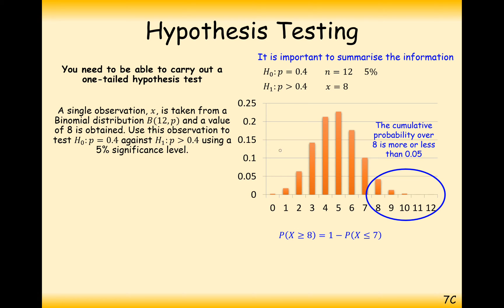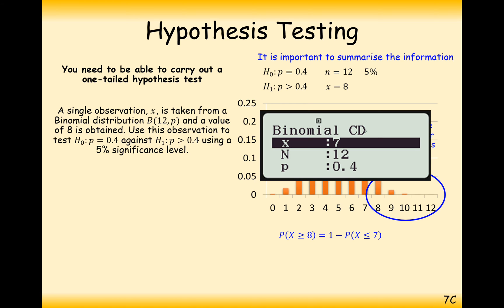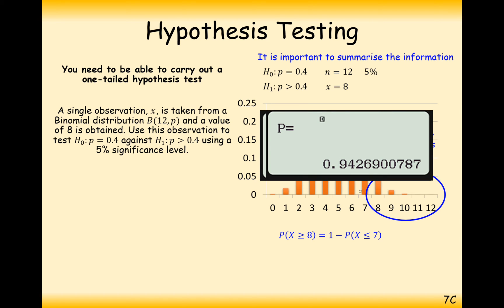We work out P(X ≥ 8) as 1 minus P(X ≤ 7). Going to binomial CD mode on the calculator: P(X ≤ 7) out of 12 with probability 0.4 gives 0.9427 roughly. So 1 minus that gives 0.0573, which is more than 5%.